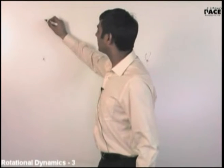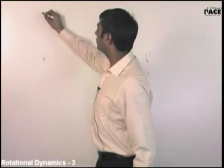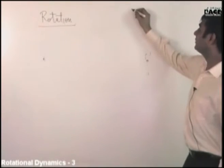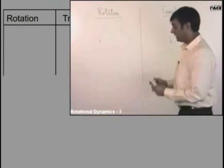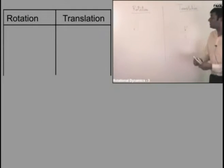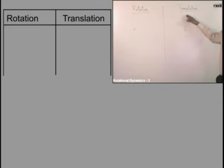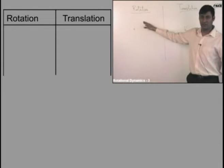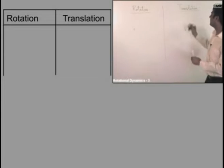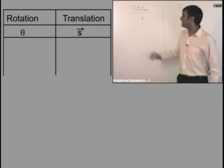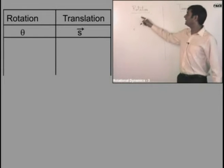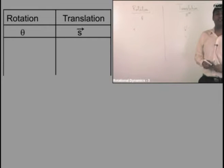Let us focus on the subject. In rotation there is a motion called translation. In translation you have displacement, here you have angular displacement. Is angular displacement a vector?